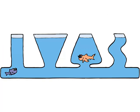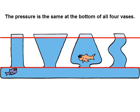These Pascal vases illustrate that water pressure depends on depth and not on volume. The water surface in each of the connected vases is at the same level. Pressures at equal depths are the same — at the bottom of all four vases, for example, the pressures are equal.